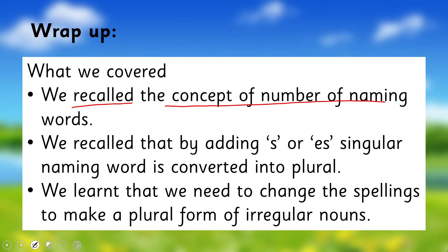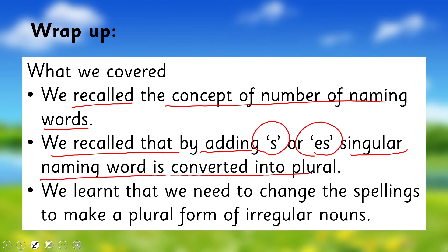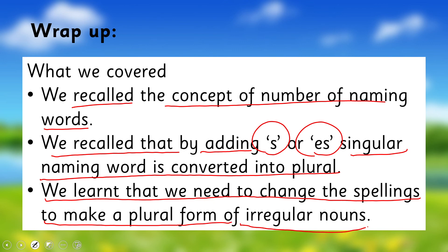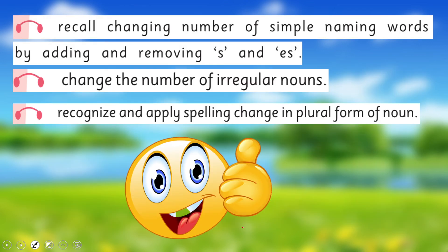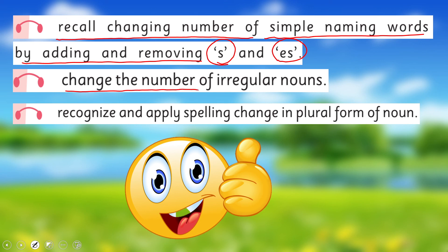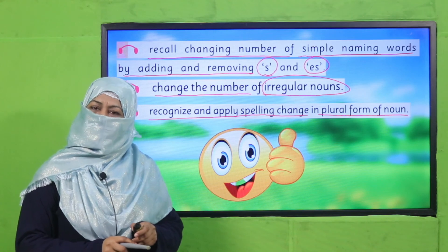In this way, we have achieved our SLOs. We recalled the concept of number of naming words — that by adding -s or -es to singular naming words they are converted into plural. We also learned that for irregular nouns we need to change the spellings to make their plural forms. So we achieved our SLOs: to recall changing the number of simple naming words by adding and removing -s or -es, to change the number of irregular nouns, and to recognize and apply spelling changes in plural forms of nouns.